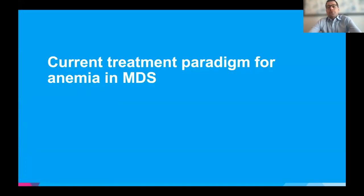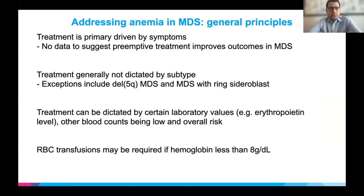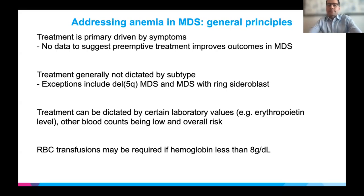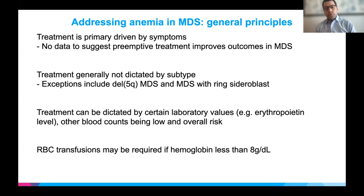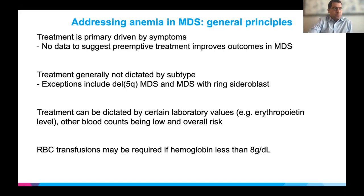Now I'll talk through the current treatment paradigm for anemia in MDS. Some general principles: treatment is primarily driven by symptoms, and there's no data suggesting preemptive treatment improves outcomes. The burden of anemia is measured based on symptoms — some people have low symptom burden with moderate or severe anemia, and some have severe symptom burden with mild anemia. Treatment is generally not dictated by subtype, with the notable exception of deletion 5q-minus MDS and MDS with ring sideroblasts. Red blood cell transfusions may be required if hemoglobin gets below 8, and especially below 7.